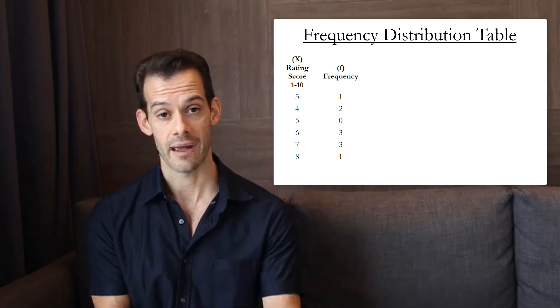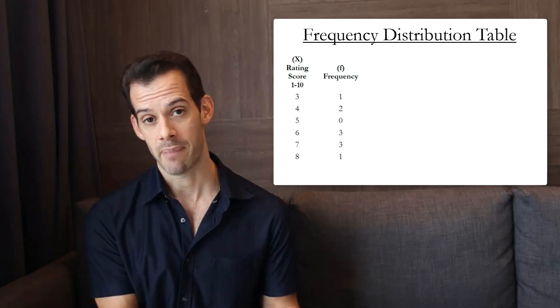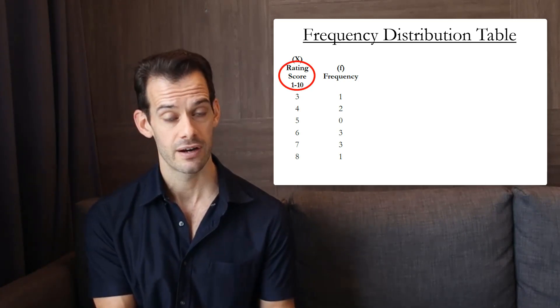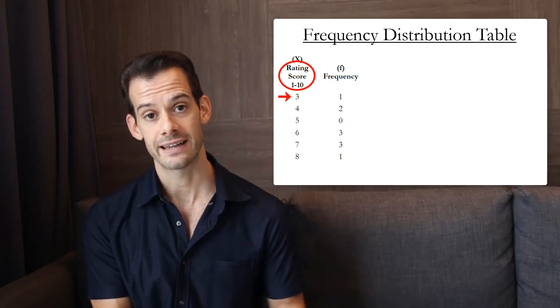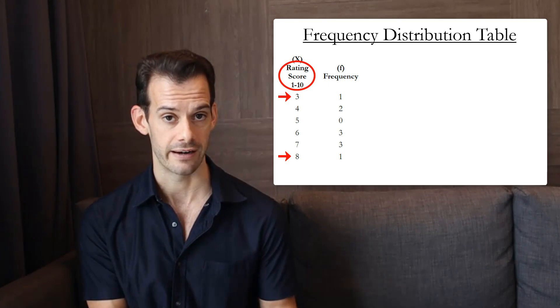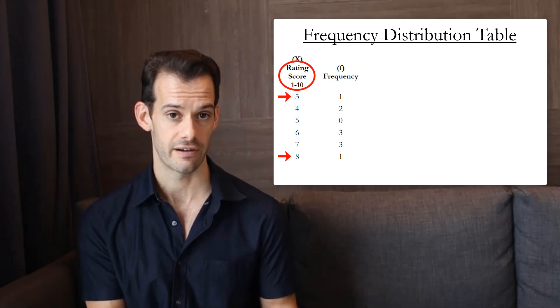So in this example we can see that the possible values for x range from 1 to 10 and that's clearly labeled, but we start at 3 and continue up to 8. We don't need to include rows for 1 and 2 or 9 and 10 because the reader can infer that these had a frequency of 0.